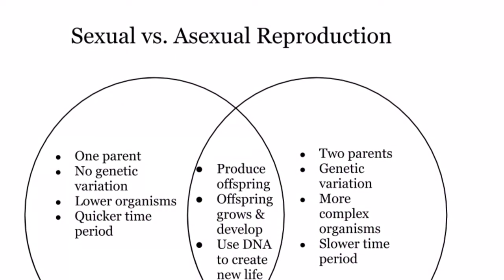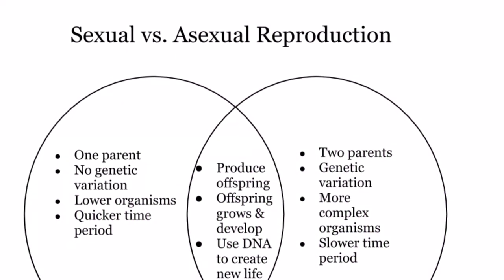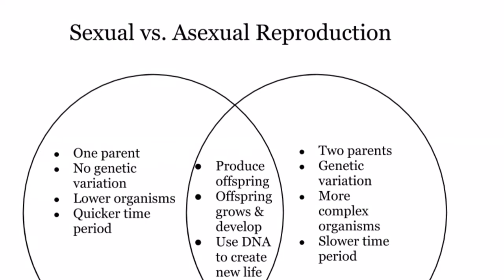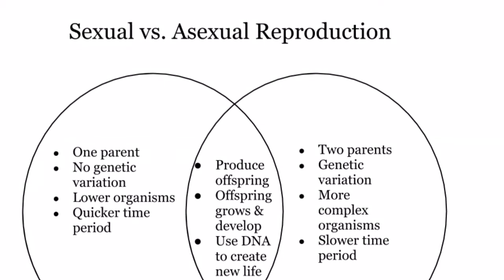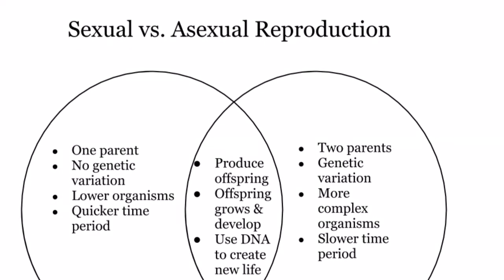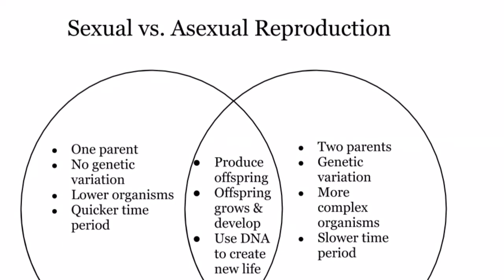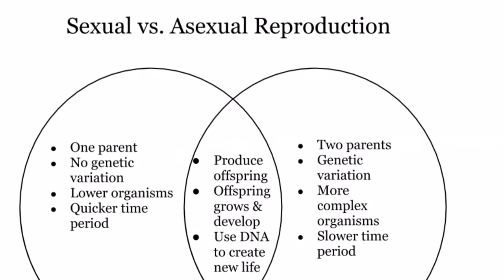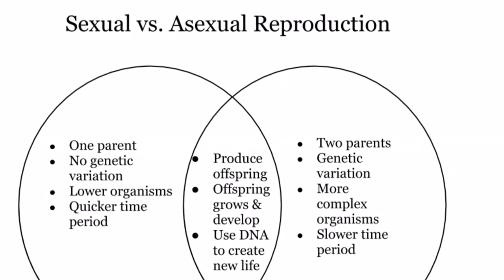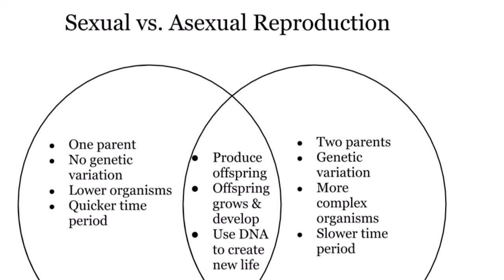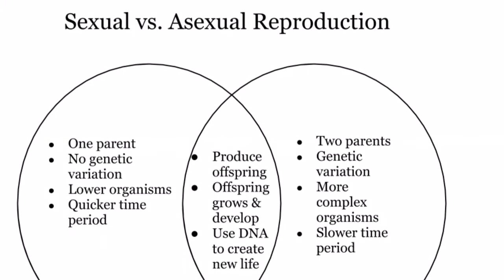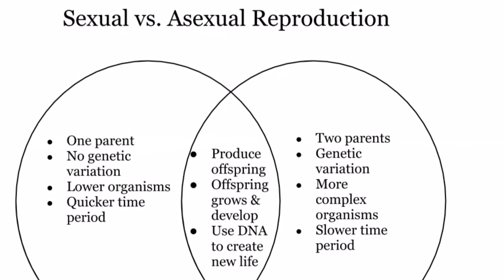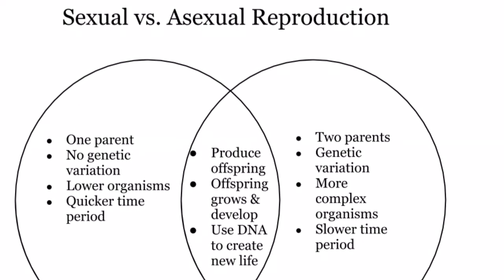Asexual reproduction occurs when one organism produces one or more offspring. These offspring will be uniform. One advantage of asexual reproduction is that the time between the start of the process and the organism being born is really quick.